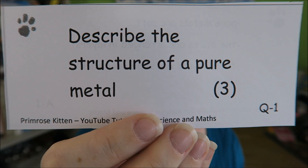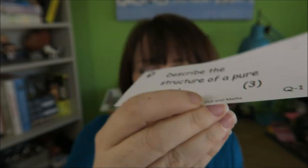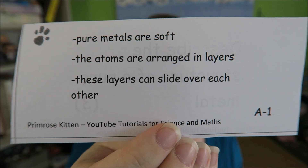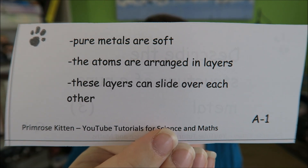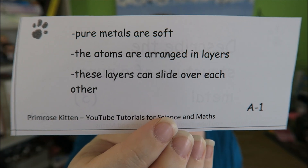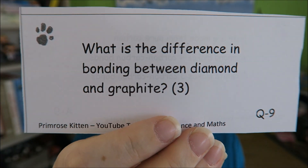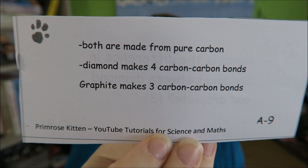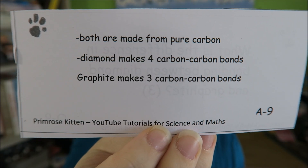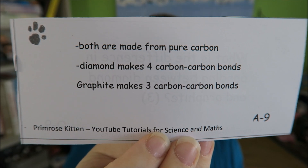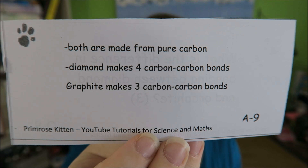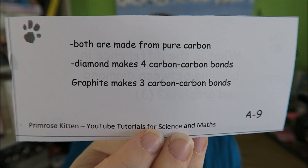Describe the structure of a pure metal. Pure metals are soft because the atoms are arranged in layers, and these layers can slide over each other. The examiners love that question. What is the difference between diamond and graphite? Both are made from carbon, but diamond makes four carbon-carbon bonds and graphite makes three carbon-carbon bonds.